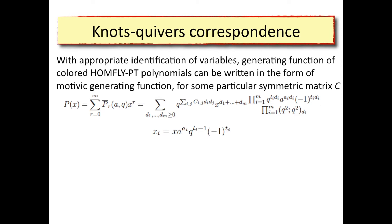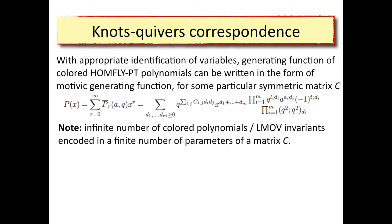One consequence of this relation between knots and quivers is that the generating functions of colored HOMFLY polynomials can be encoded in data determined by a given quiver. Surprisingly, an infinite number of colored HOMFLY polynomials, or LMOV invariants, is encoded in a finite number of parameters of a matrix C. The data needed on the right-hand side is just the matrix C and the parameters A_i, L_i, and T_i. Fixing this finite number of parameters, we can read off infinitely many colored HOMFLY polynomials.